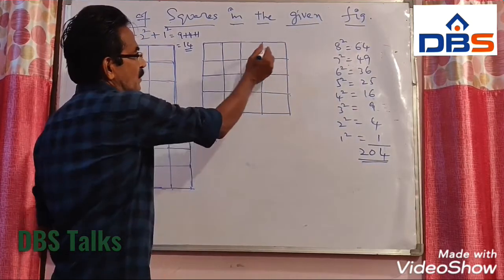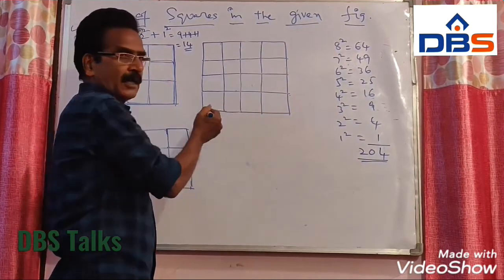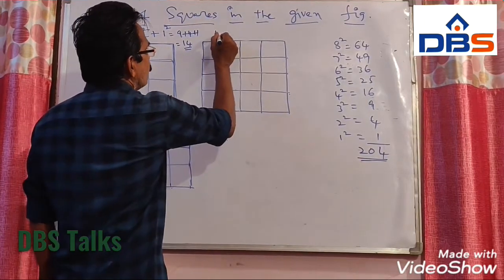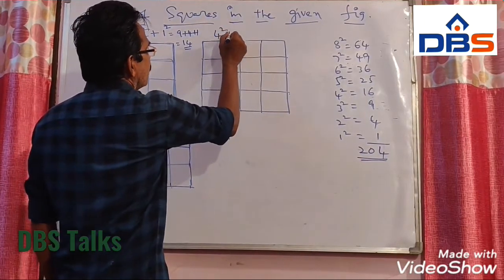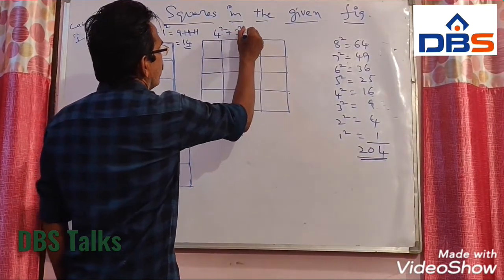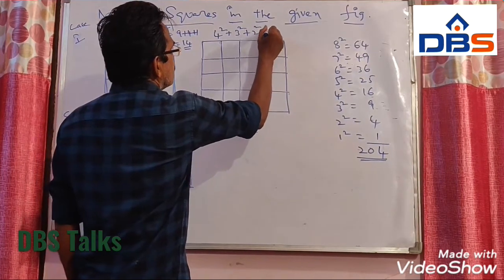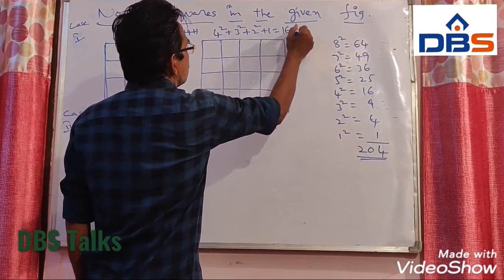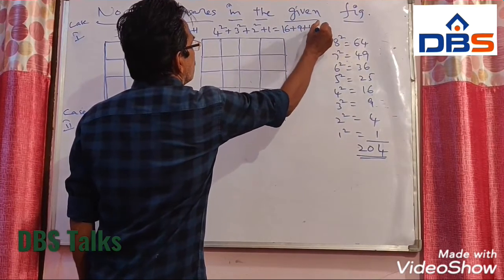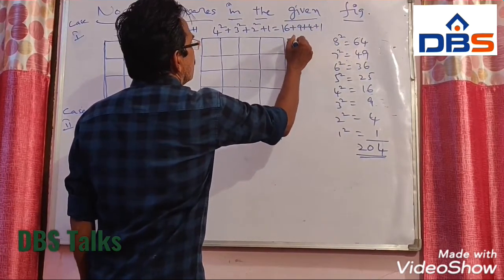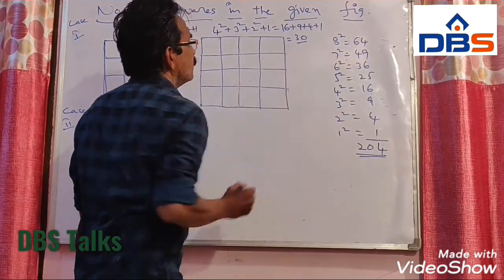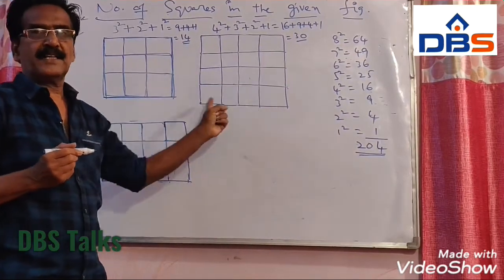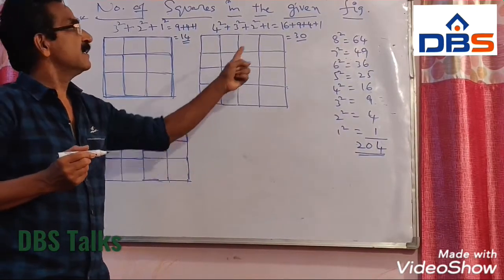Look at this figure — there are 4 rows and 4 columns. We need not count. So 4 squared plus 3 squared plus 2 squared plus 1 squared, that is 16 plus 9 plus 4 plus 1, which comes to 30. So the total number of squares in this figure is 30.